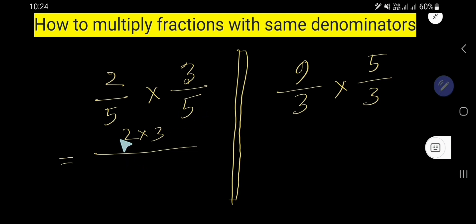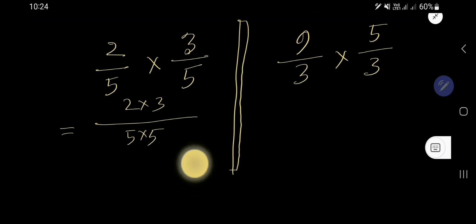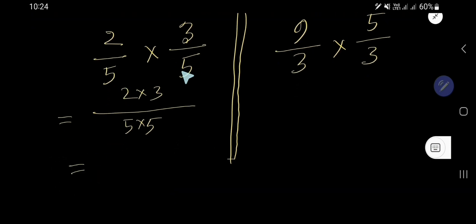Just multiply the bottom numbers together. Here the bottom number is the same, that is, the denominator is same. So 2 times 3 is 6 over 5 times 5 is 25. There is no common factor between these two numbers, so this is the result.